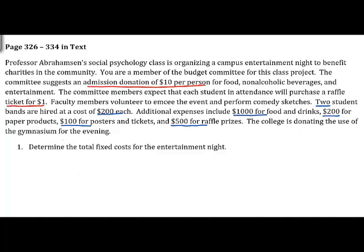The college is donating the use of the gymnasium for the event. In this first question, we want to determine the total fixed costs for the entertainment night — that is, how much putting on this event will cost no matter how many students show up. We're going to have to pay for both bands: $200 each, so that's $400.